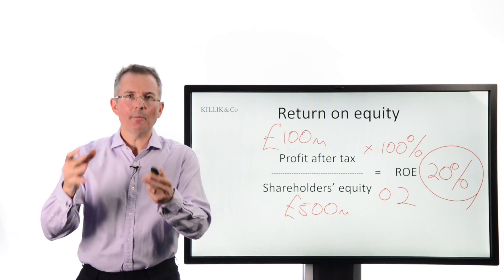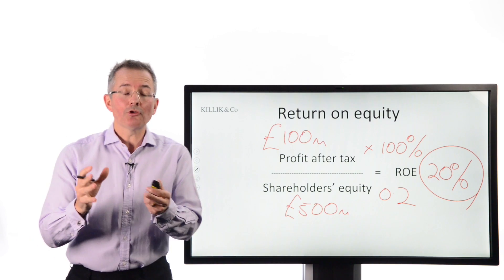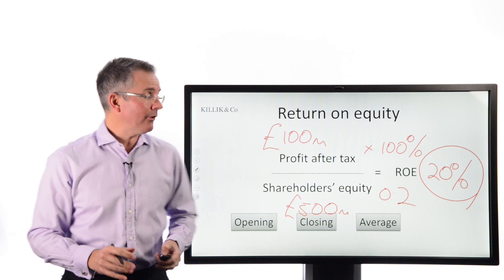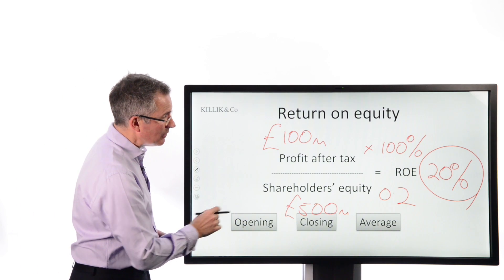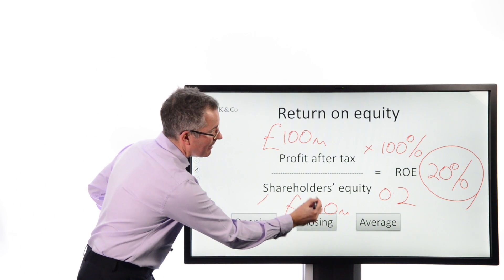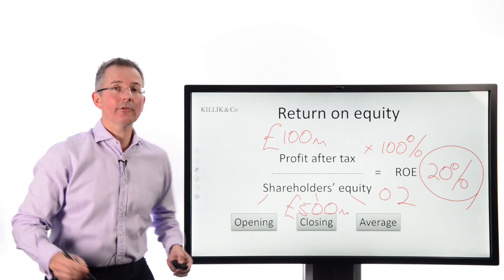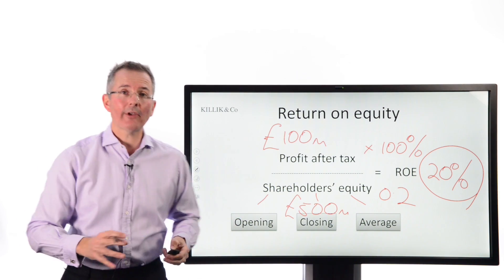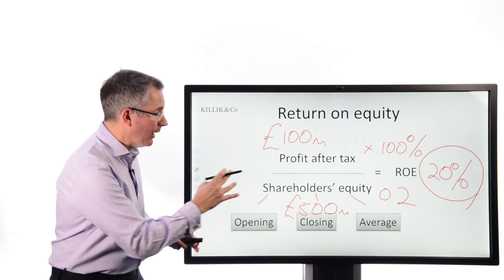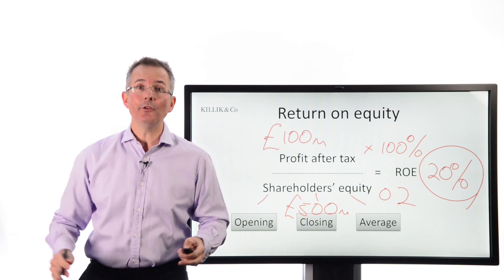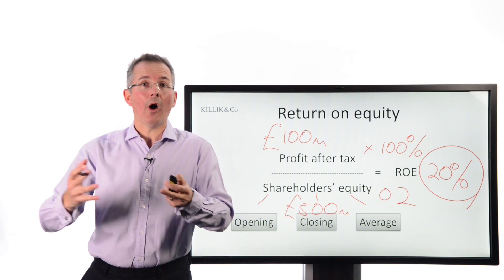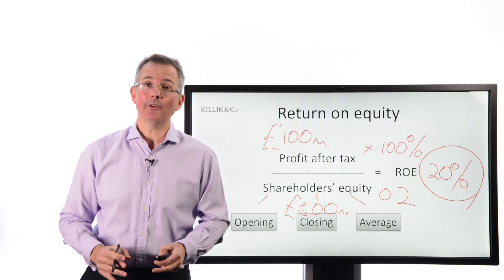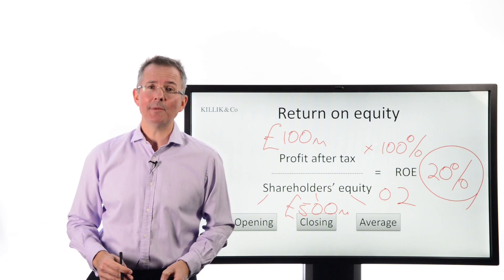Shareholders' equity can be calculated in a few ways - using opening equity at the start of the year, closing equity at the end, or an average of the two. It's worth asking how the figure has been calculated, because if you see two ROE figures that don't agree, the explanation may be the calculation method rather than an error. This is true of most financial ratios.